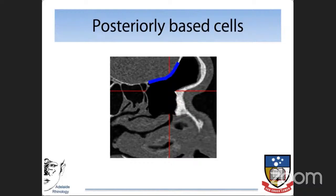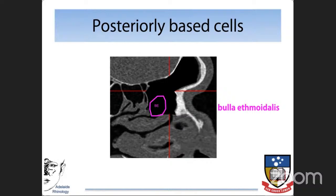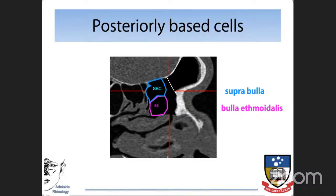Looking at posteriorly-based cells, these are associated with the skull base. The bulla ethmoidalis is a common cell found in most patients and does not typically touch the skull base. On rare occasions it can progress all the way up to the skull base. Cells that sit above the bulla ethmoidalis but don't go through the frontal ostium are called supra-bulla cells. Supra-bulla cells that actually go through the frontal ostium push the drainage pathway anteriorly.